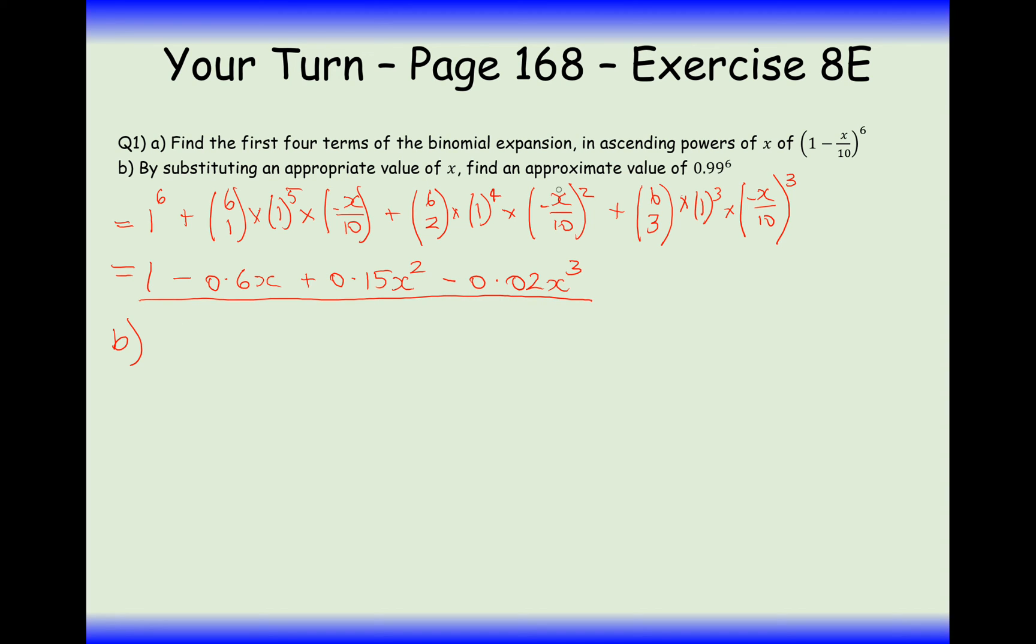Now we're on to part B, and we need to approximate 0.99 to the power of 6. So what does x have to be? Well, if 1 minus x over 10 is what we're going to use as our value for 0.99, then 0.01 must equal x over 10, so therefore 0.1 is going to be our value for x.